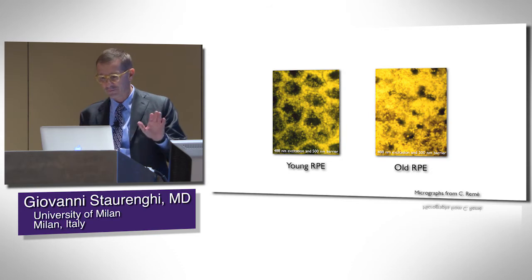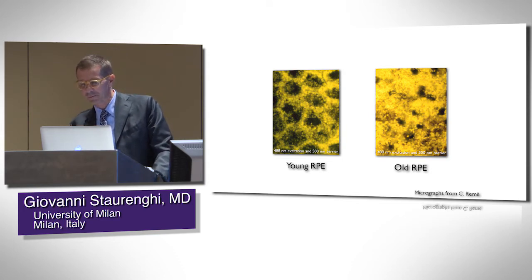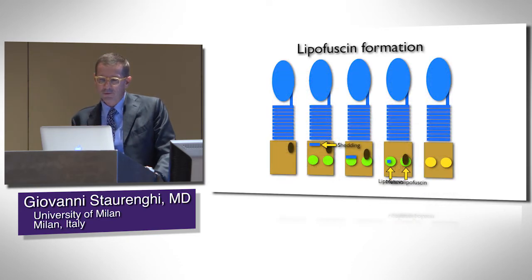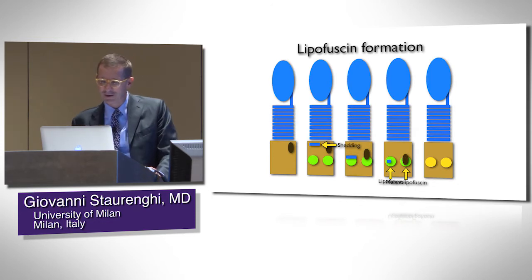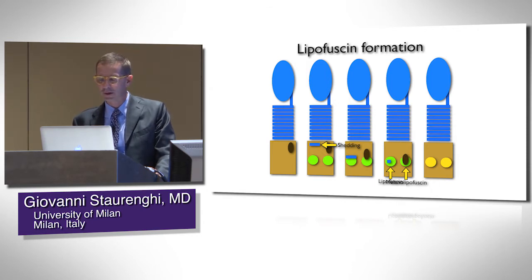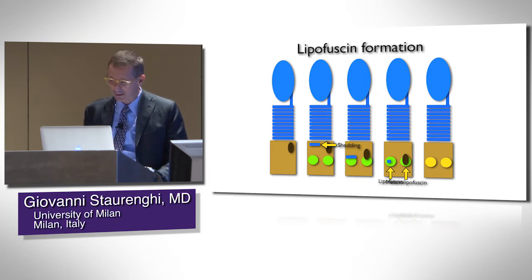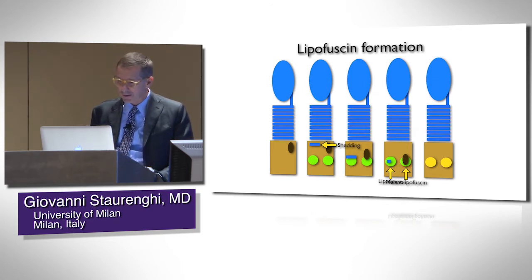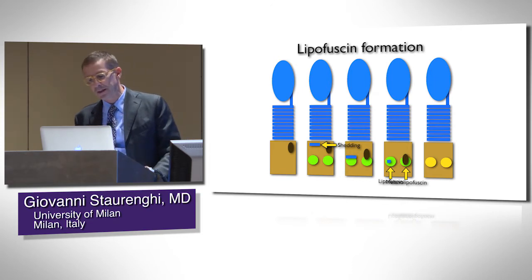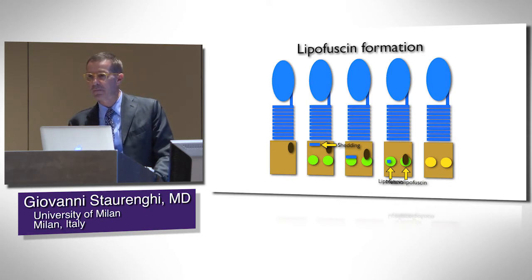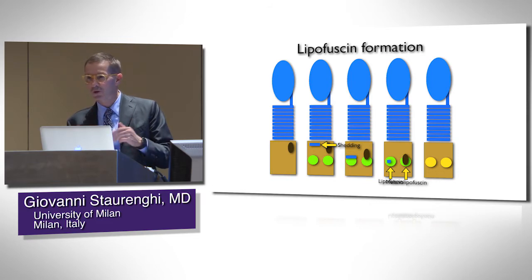As you see in this flat mount of RPE cells by Charlotte Remy, lipofuscin is related to the shedding of photoreceptors and their incomplete digestion, which creates lipofuscin. The other possibility to create lipofuscin is melanolipofuscin, which comes from the degradation of melanin granules.